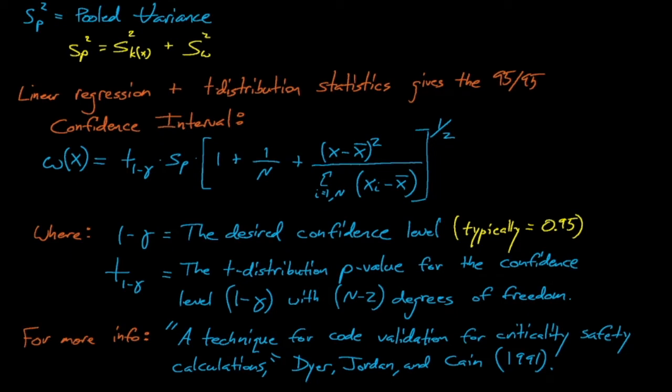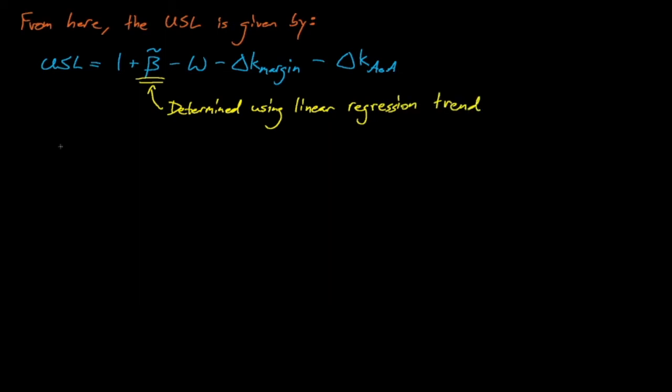So now that we have the 95-95 confidence interval, we can determine our system's USL by taking 1, adding the computational bias, which is again determined using the linear regression fit that we've developed, subtracting capital W, and subtracting our administrative and AOA margins. For conservatism, we generally assume that this W is equal to the maximum value of W in our linear regression fit, and this maximum value will either occur at the minimum or maximum value of x.